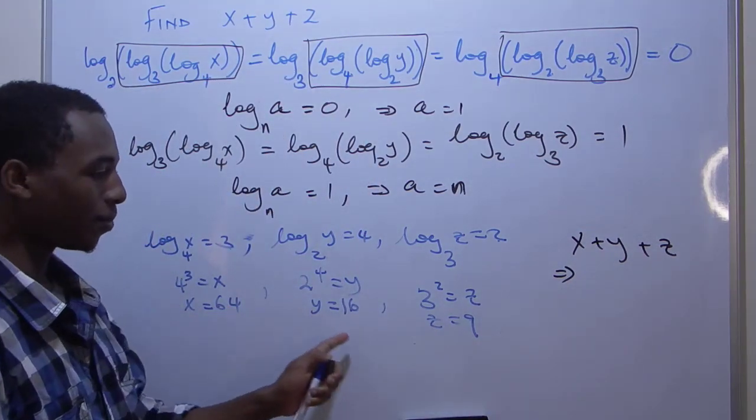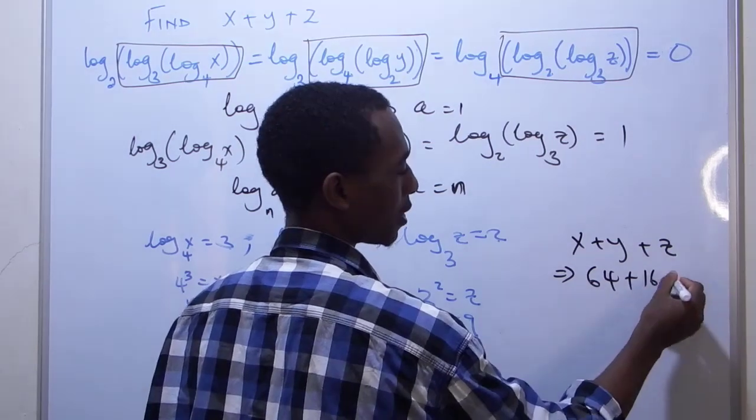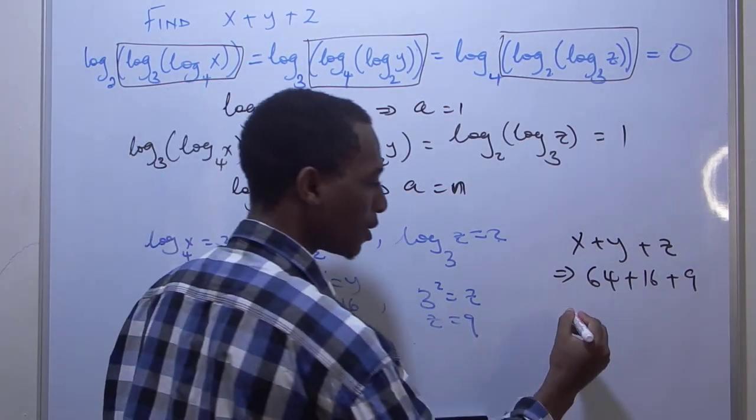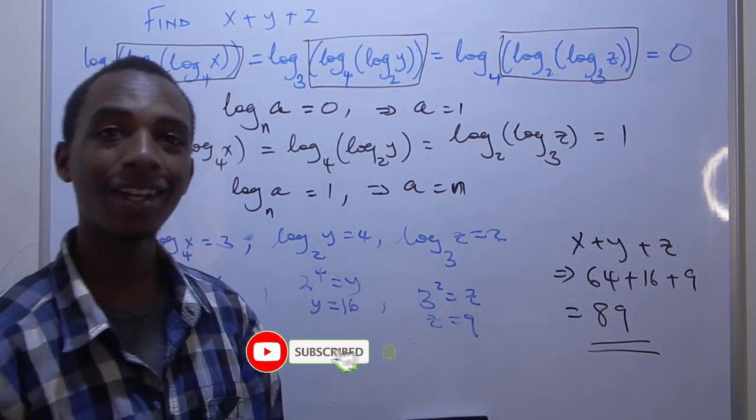This is going to be 64 plus 16 plus nine. 64 plus 16 plus nine. That's about 64 plus 25, which is 89. All right, so that's our answer.